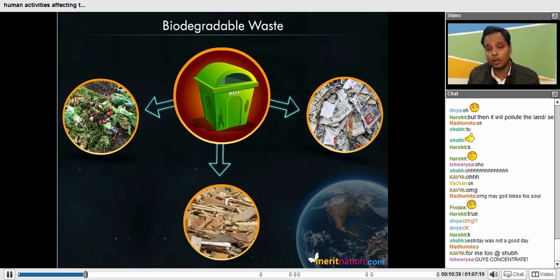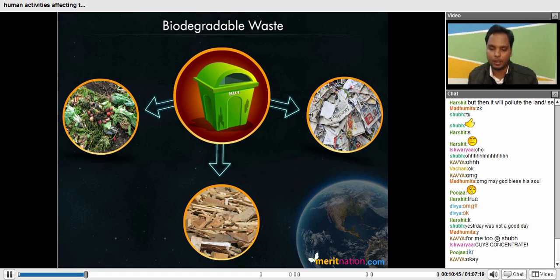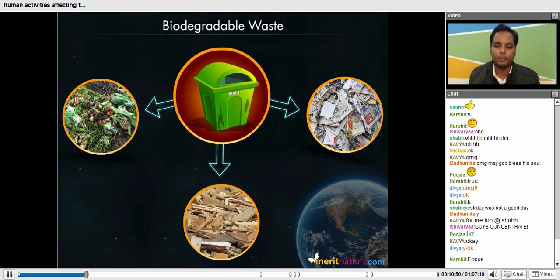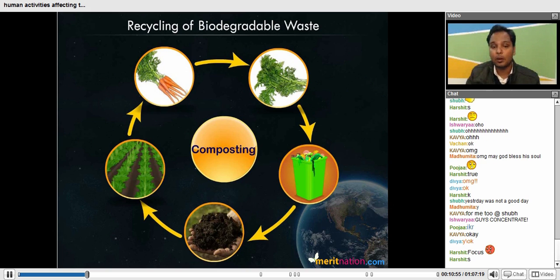But what happens - what we are producing artificially, that becomes non-degradable. The biggest example is your plastic. So next is how we can recycle biodegradable waste.